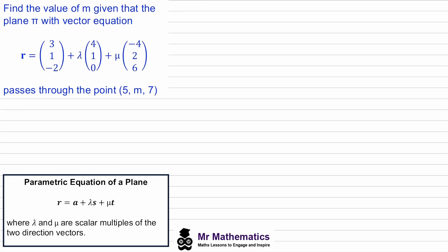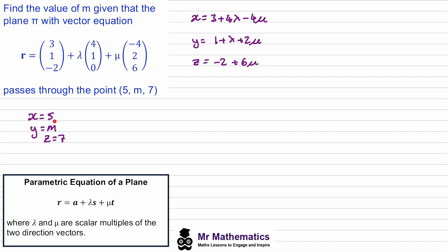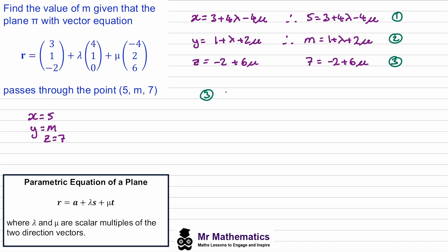Finally, we've been asked to find the value of m, given that the plane pi with a vector equation passes through the point (5, m, 7). You may want to pause and try this yourself. The five is our x value, m is the y value, and seven is the z value. We find the general form of x, y, and z from the plane equation, then substitute these values into our general equations — just as we did in the previous example — to find mu and lambda.